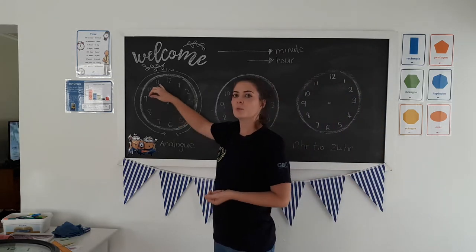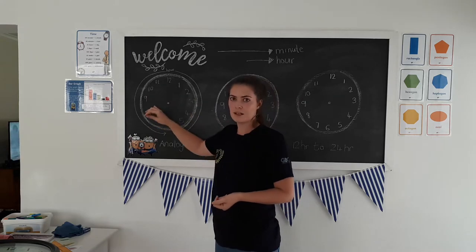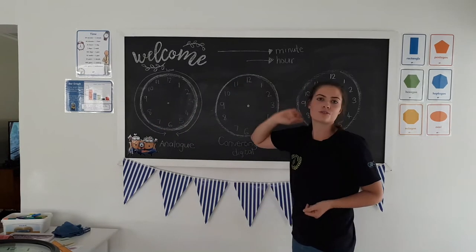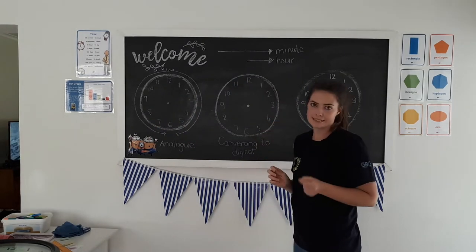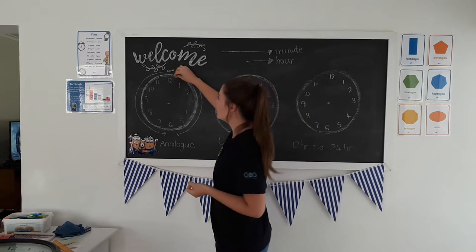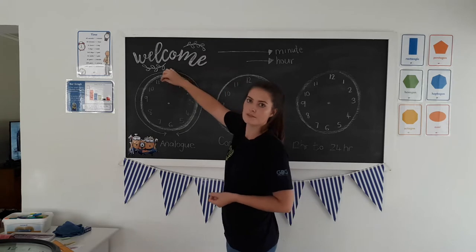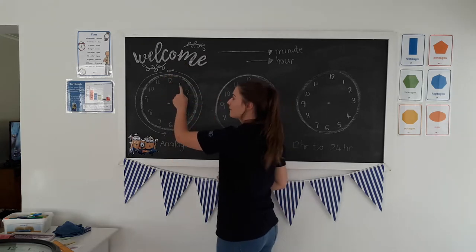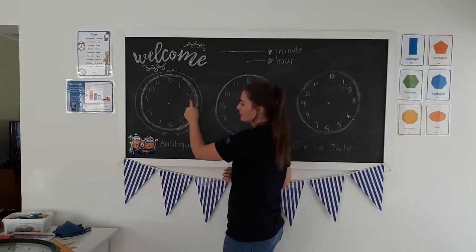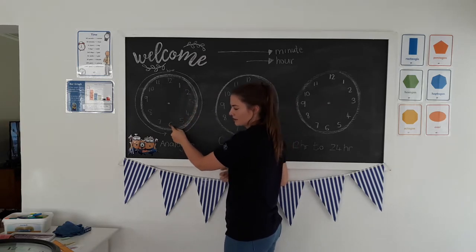On this clock we can see the hours, but with the two different hands you can also see the minutes, because each of these is a five-minute interval, a five-minute gap. So we count five, ten, fifteen, twenty, twenty-five, thirty.